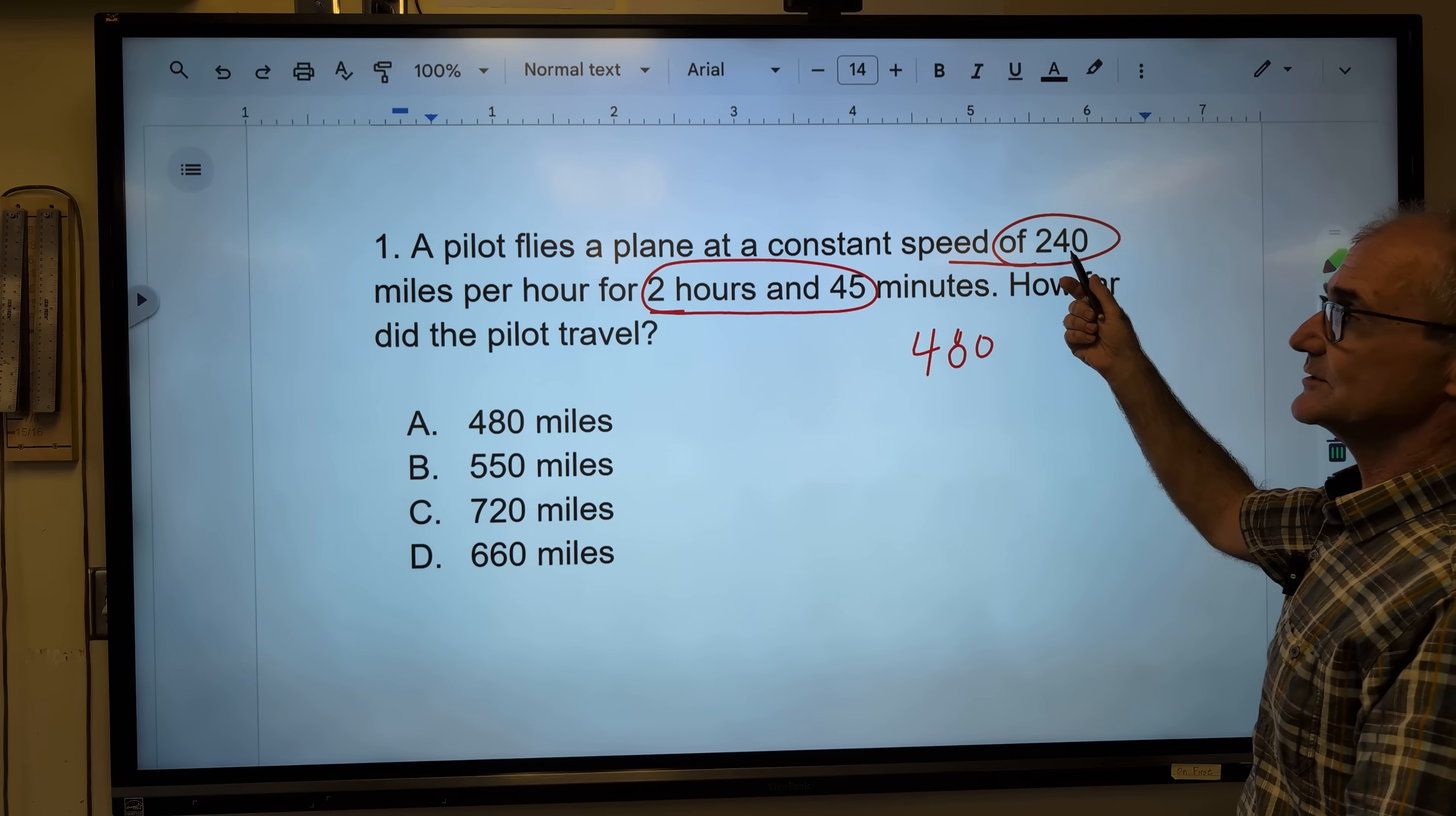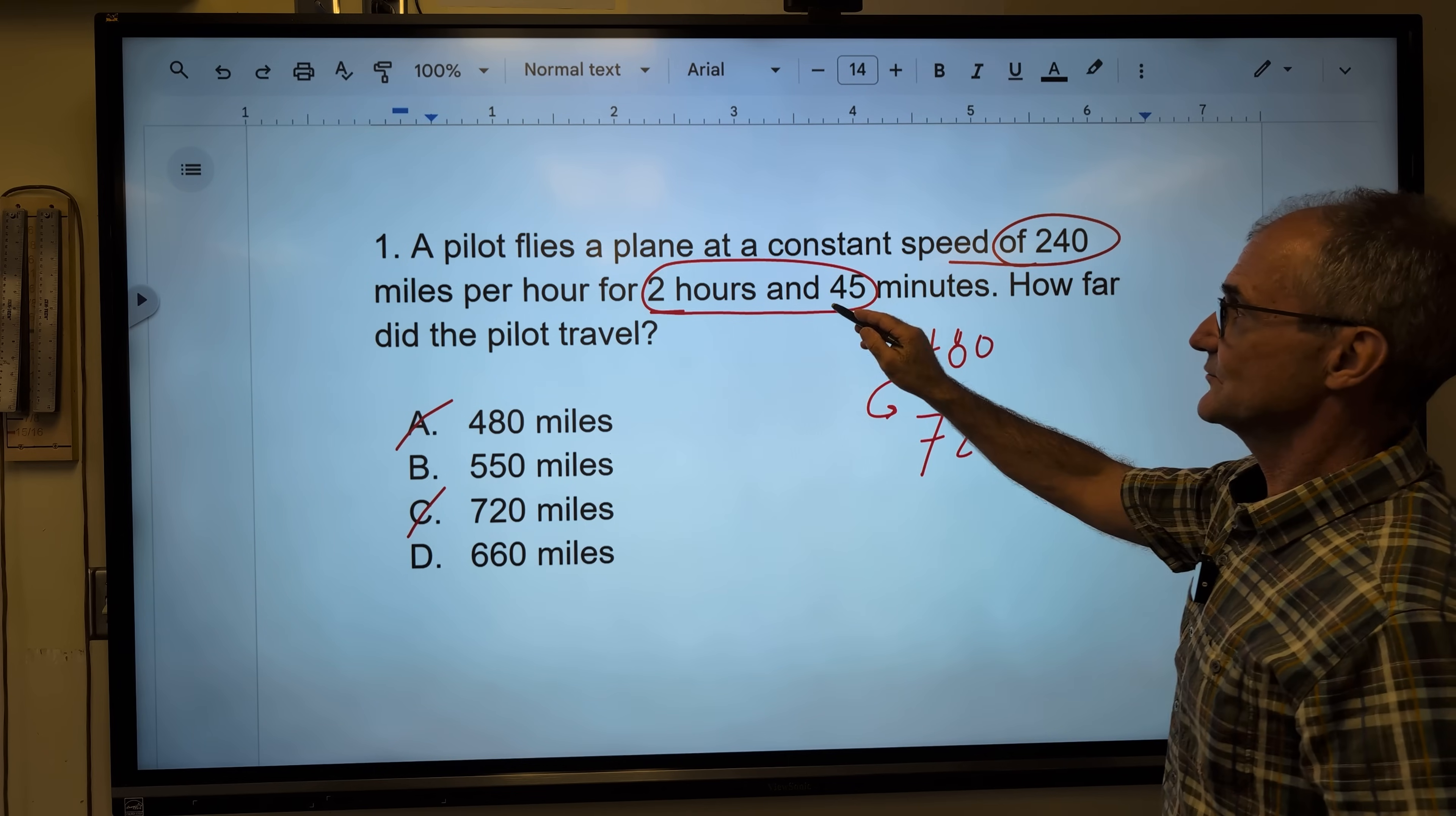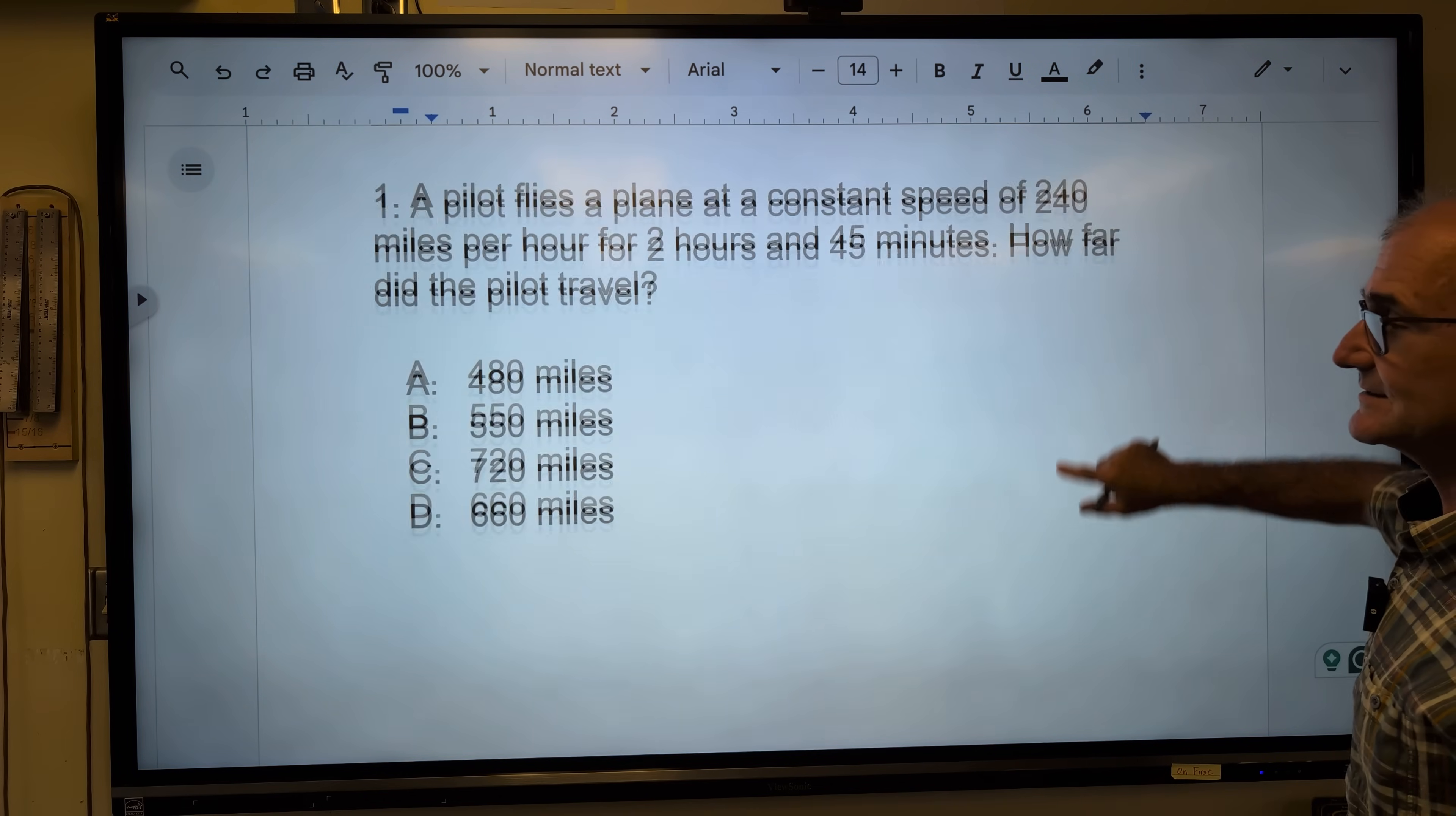If I were going 240 miles per hour for 3 hours, I would do 3 times 240 and get 720. I am not going 2 or 3 hours, so I'm going to cross out those two answers. That leaves me with two answers remaining, but I am three quarters of the way between here and here. This 45 minutes is 0.75, so I'm three quarters of the way between here and here. So which value between these two is closer to this one? Answer D. So the correct answer is answer D. That's why it's called arithmetic reasoning without a calculator, how to reason your way through these problems.